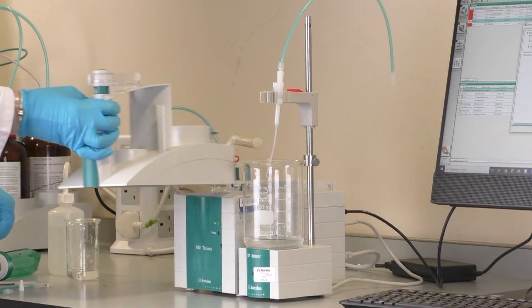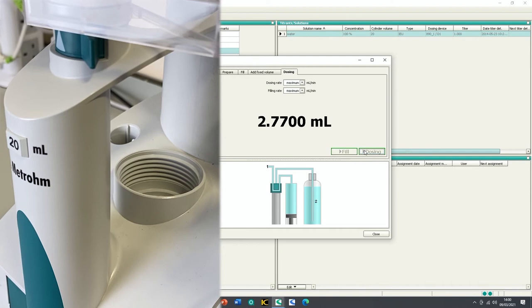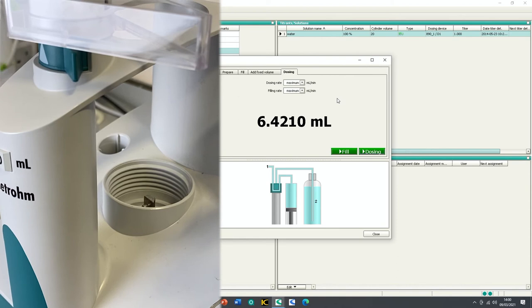Attach the exchange unit to the device. In manual control, use the dosing command to move the piston rod up by approximately 6.5 centimeters until it protrudes just out of the body of the exchange unit.